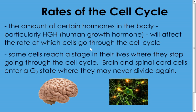Some cells will reach a stage where they no longer divide — in particular, brain cells and spinal cord cells. When they reach a certain point they stop dividing and enter what's called the G0 stage, where they may never divide again. That's why injuries to the brain and spinal cord are more or less permanent. Scientists are working on how to get these cells out of G0 and back into G1 to divide again — potentially repairing spinal cord injuries, reversing paralysis, or fixing brain damage. So far they haven't had much luck, and those cells remain stuck in G0.